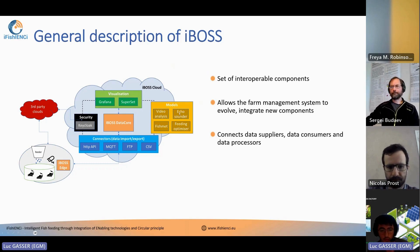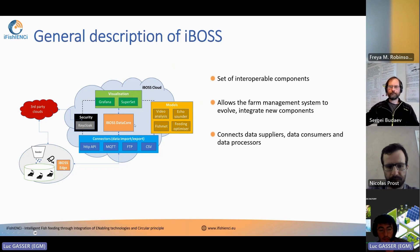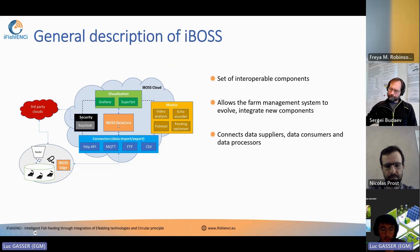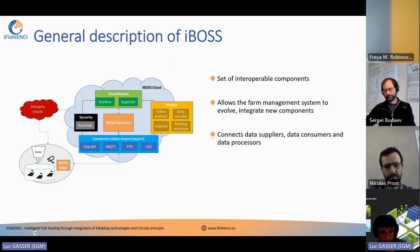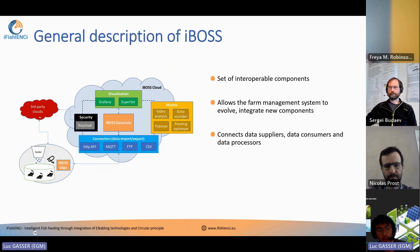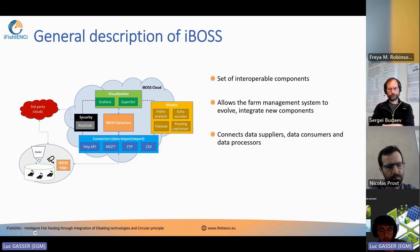It's very easy to add, for example, a new model to the set of existing ones. The main component of the IBOS is its data core — it's where all the data are stored. The data core connects the data suppliers, which are the sensors installed on the site and data coming from third-party clouds such as OxyGuard and Biocernor. It connects those data suppliers to the data consumers, which are the visualization interface the user will use, and also the data processors — all the models used in the project.